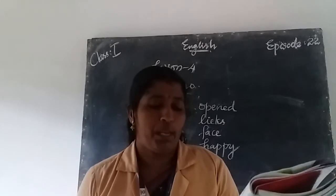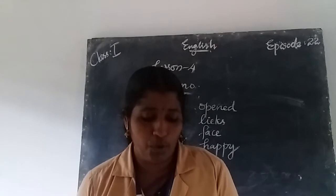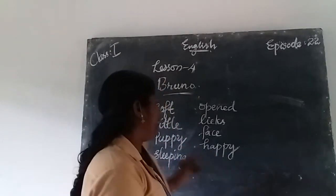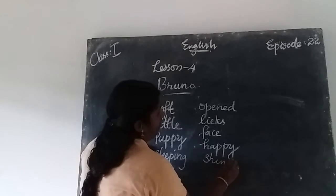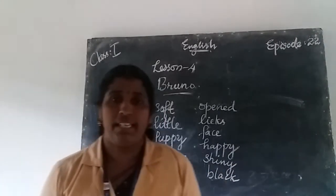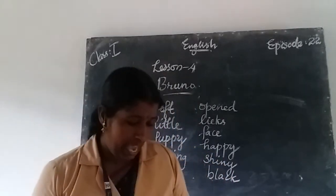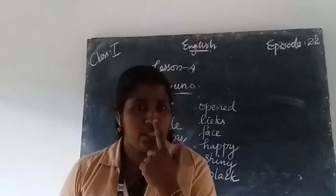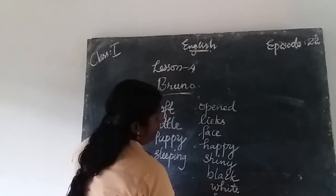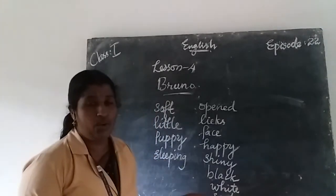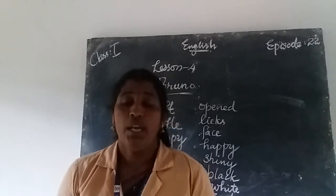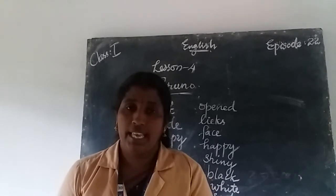The puppy has shiny black eyes and a white spot on his nose. Shiny — S-H-I-N-Y — black — B-L-A-C-K — eyes. On his nose there was a white — W-H-I-T-E — spot — S-P-O-T. As you are studying in first standard, I am repeating the words so many times so it is easy for you to grasp and pronounce them.